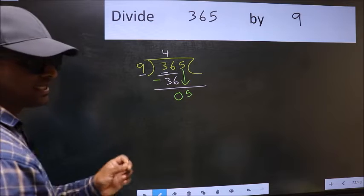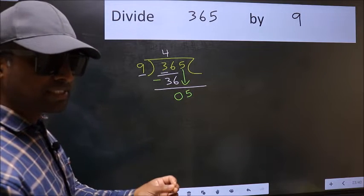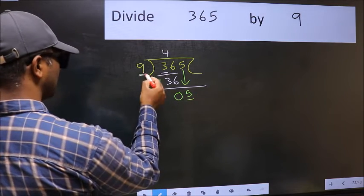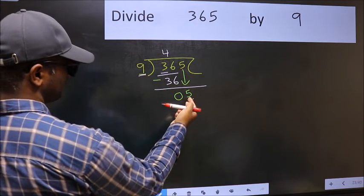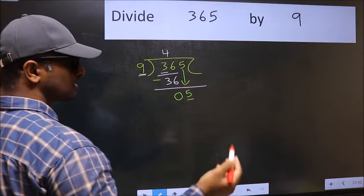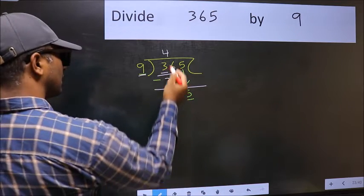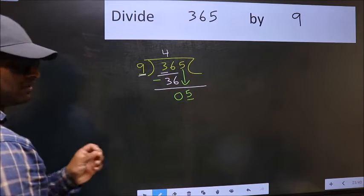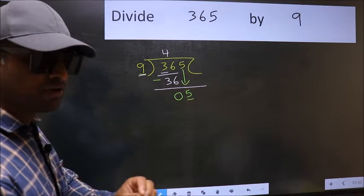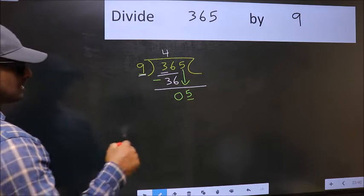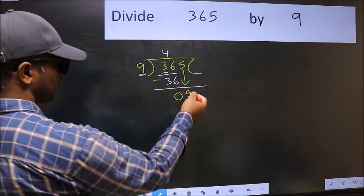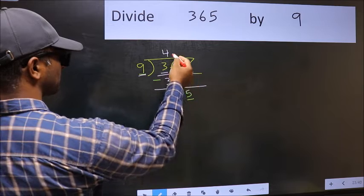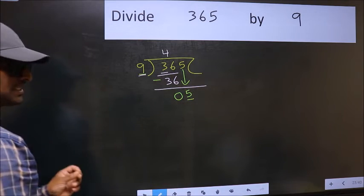After this step, the mistake happens. Here we have 5 and here 9. 5 is smaller than 9. So what many do is they directly put a dot and take 0, which is wrong. Why is it wrong? Because you just brought this number down, and in the same step you want to put a dot and take 0, which is wrong.